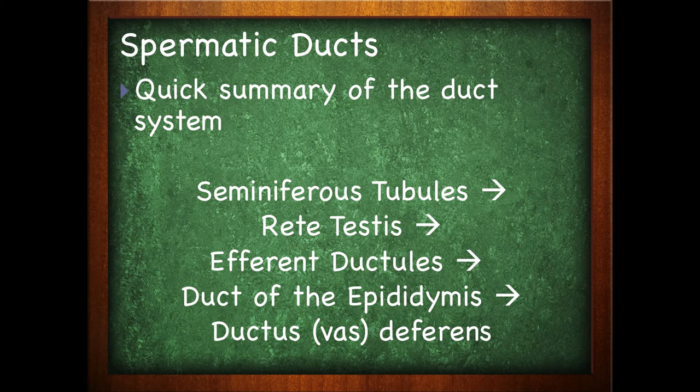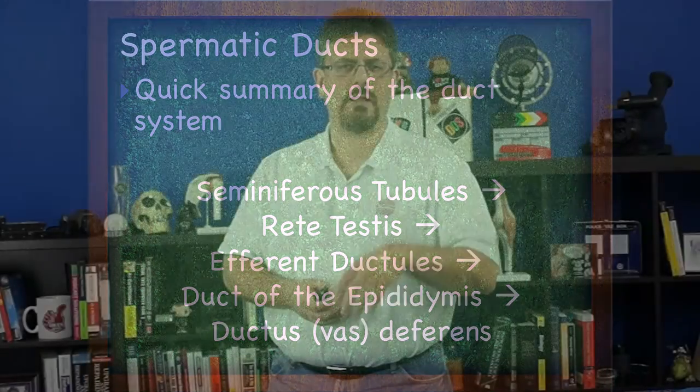A quick summary of the duct system — we're going to cover this again in more detail, but let's talk about it in general. We have the seminiferous tubules, the rete testes, the efferent ductules, the duct of the epididymis, and the ductus vas deferens. We're only looking right now at the duct system found in the scrotum. We'll continue looking at the other ducts and other parts that join in throughout the body later.